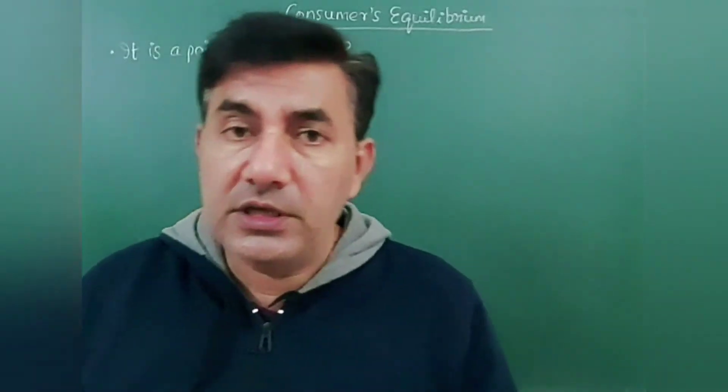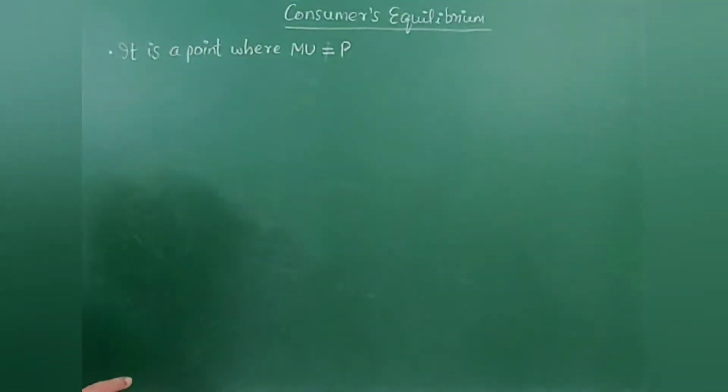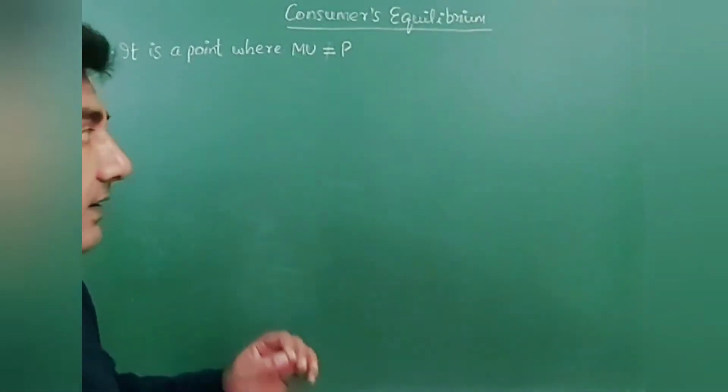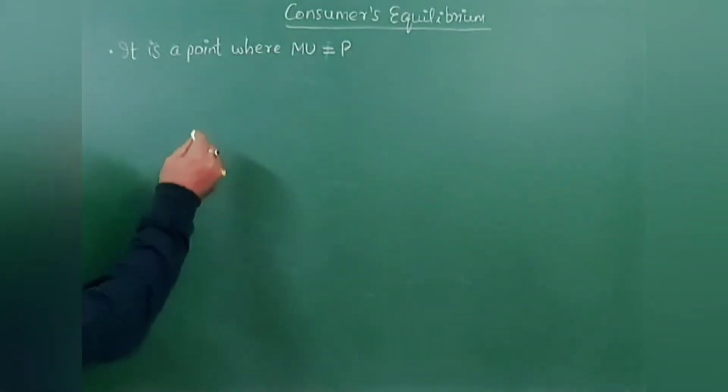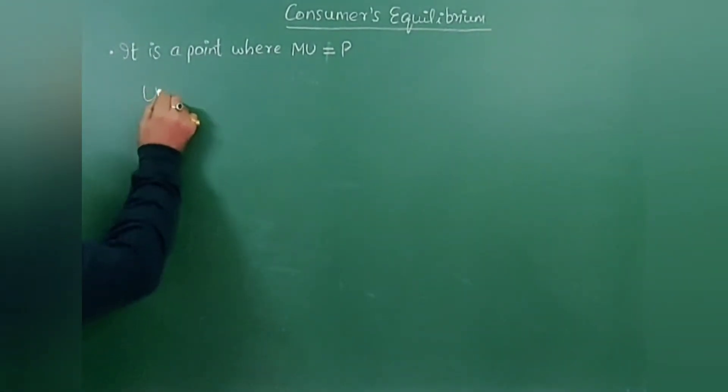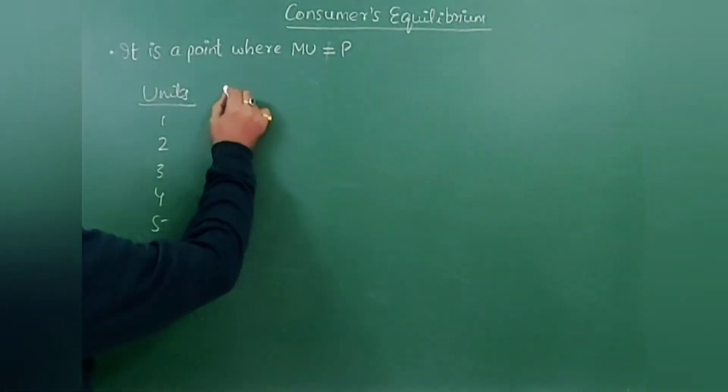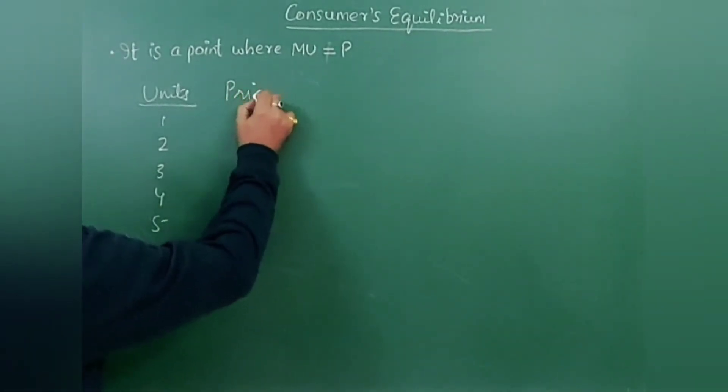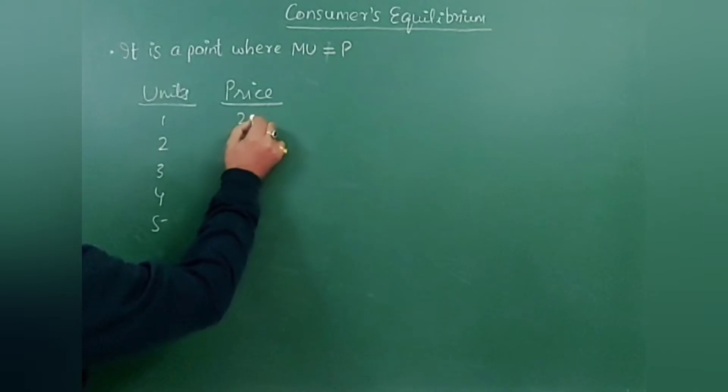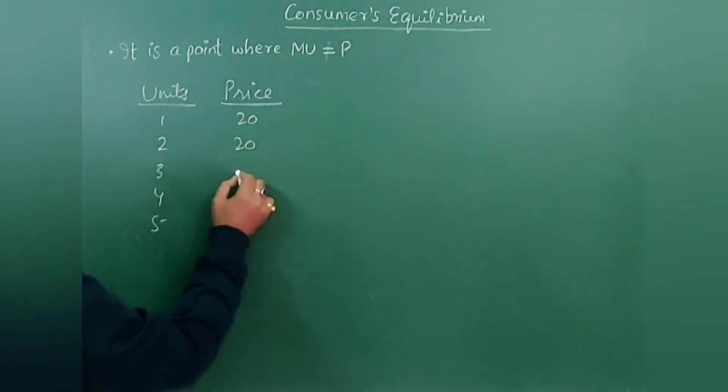Now let's try to understand by a schedule and graph. Here is the schedule. Units: say one, two, three, four, five. And price, let's say 20 rupees a product.